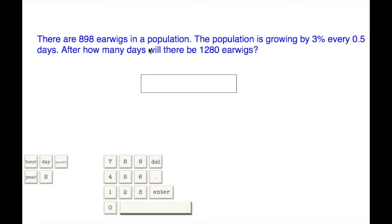There are 898 earwigs in a population. The population is growing by 3% every 0.5 days, every half day, or every 12 hours. After how many days will there be 1,280 earwigs?